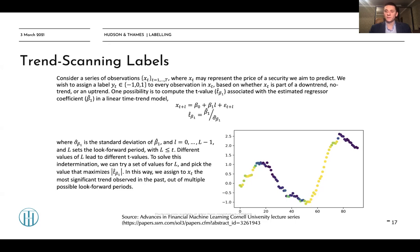One possibility is to compute the t-value associated with the estimated regressor coefficient in a linear time trend model, which can be described in the next equation: x_{t+l} = β_0 + β_1 * l + ε_{t+l}.